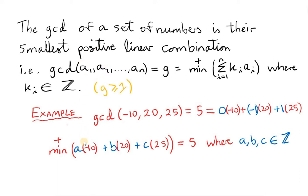The statement says that if we take all positive linear combinations of the integers minus 10, 20, and 25 — that is, we take a, b, and c as integers but make sure that the combination is positive — the minimum of all those positive linear combinations will be 5.